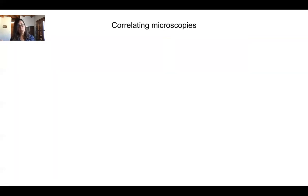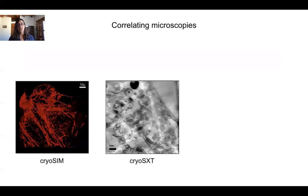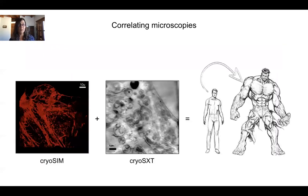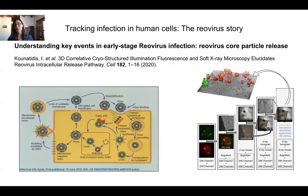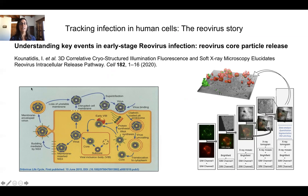Now, correlating the microscopes: I've shown you two microscopes, and the idea is that combining them gives a much more powerful technique. We do this by using the same sample in different microscopes. I'll use a recently published example from our beamline, looking at early events in reovirus infection using mammalian U2S cells. Reovirus is well used as a model virus and not necessarily a horrible pathogen, although it has some pretty nasty relatives.